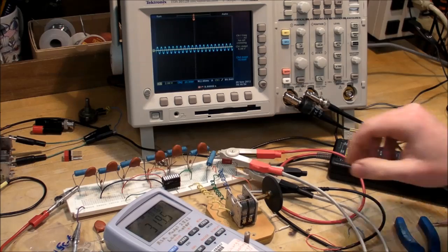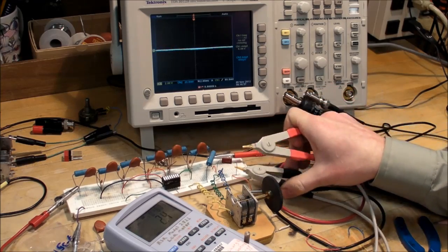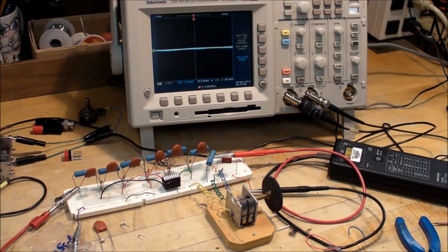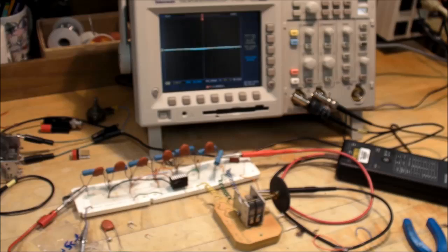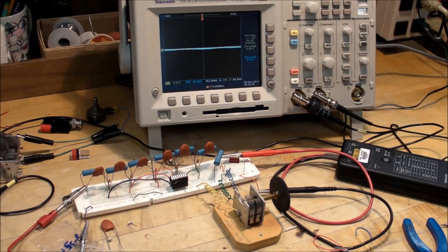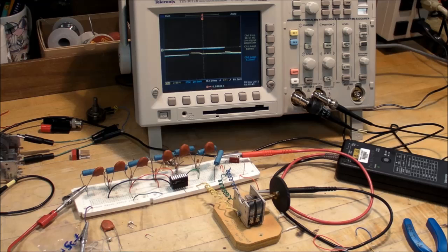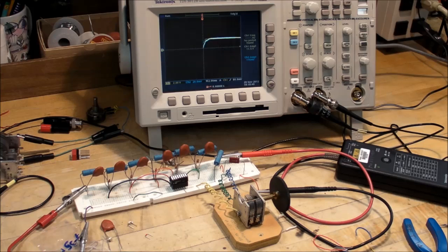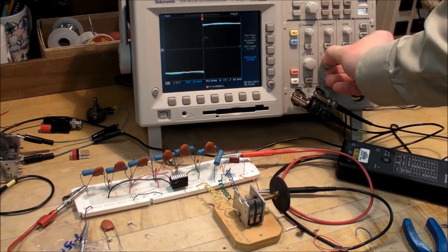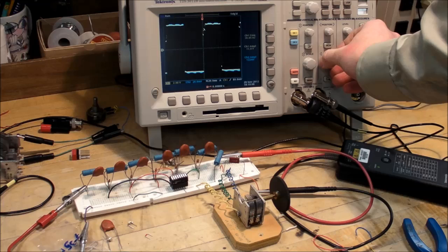Let me turn the function generator back on, gotta wait for the tubes to warm up. There we go, see it starts going down in DC and then it takes a while for the capacitance, for the signal to move up to zero volts, zero volts in the center. And then there's all this nasty noise too that usually goes away once it heats up after a minute.